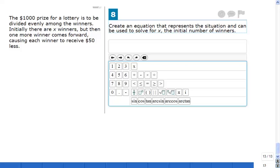How can we do that? Well, there should be a first step and the first step is to think about what will be the award for your winners before the extra winner comes forward, right? And because I have the total prize of $1,000 and I have X winners, the amount of money that each one gets will be $1,000 divided by X.